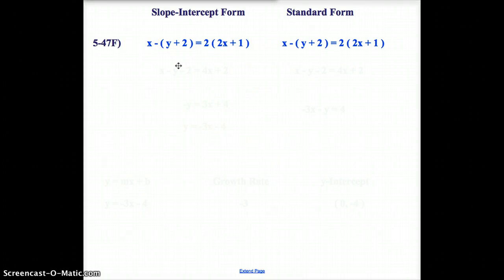We start with this equation here, and I have it set up for both of them. For both of them, we have to do the same thing. We have to distribute. On the left side, I need to distribute that negative to the y and the 2. And on the right side, I need to distribute the 2 to the 2x and the 1. When I distribute, both sides end up with x minus y minus 2 equals 4x plus 2.